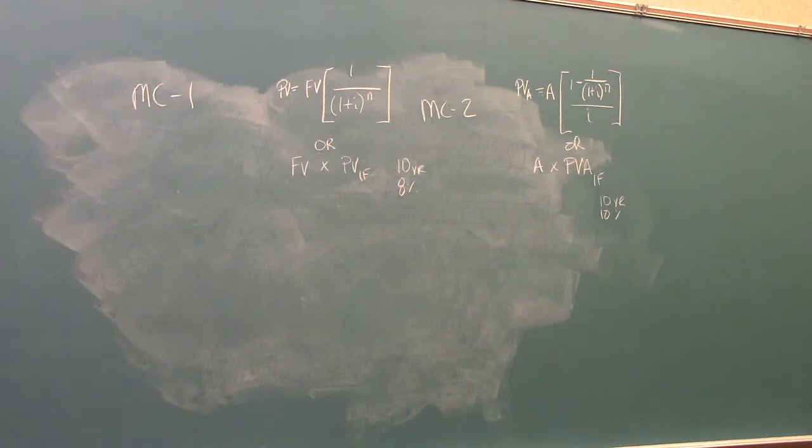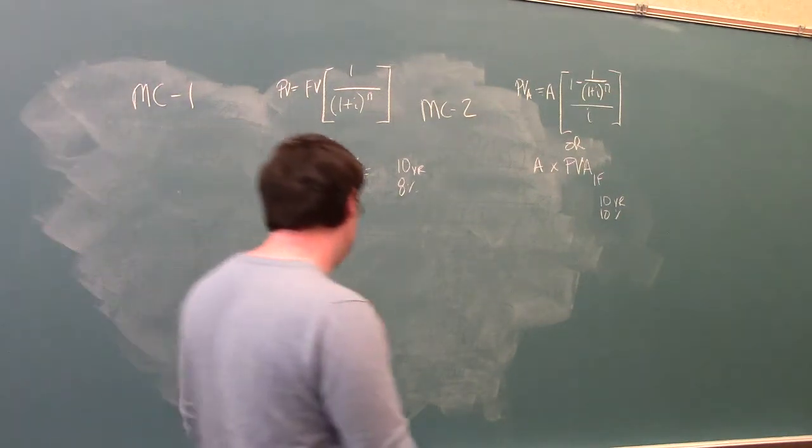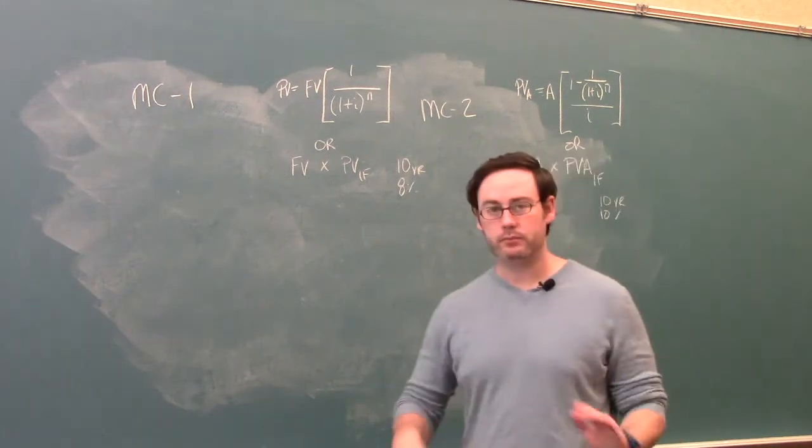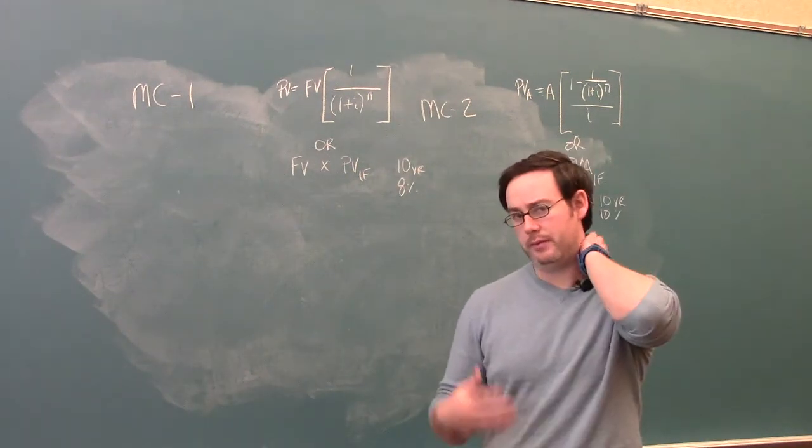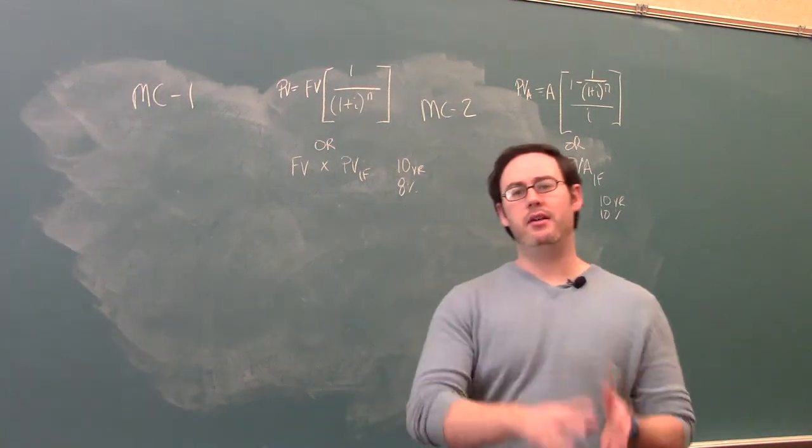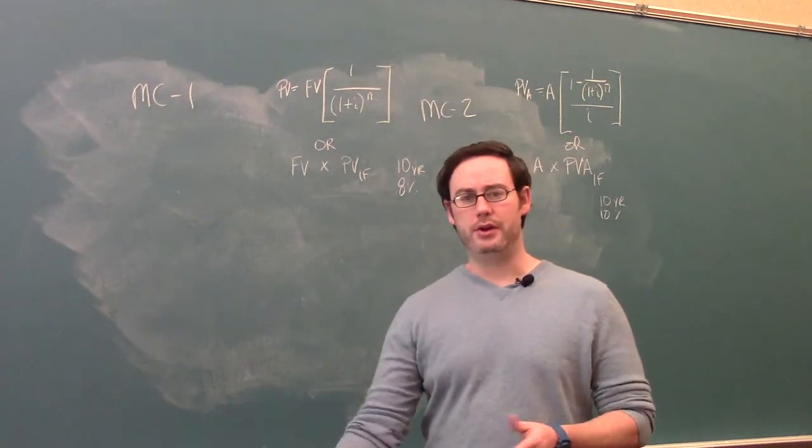Okay, MC1 and MC2 deal with the time value of money. Before we step into the problem, let's take a quick second and talk about the time value of money. The general rule of thumb, the concept that we're going to talk about, is that when discussing time value of money, a dollar today is worth more than a dollar in the future.